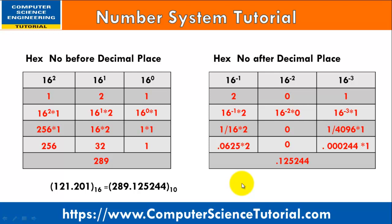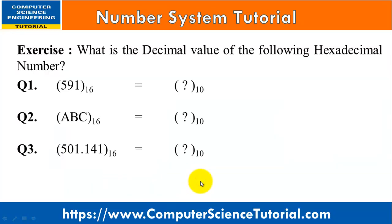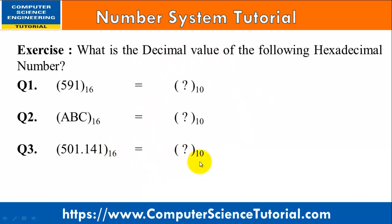Friends, the conversion process is very simple. First convert the hexadecimal digits before the decimal point, then convert the digits after the decimal point, and write both results together. Here is an exercise for you: calculate the decimal value of the following hexadecimal numbers — 591 base 16, ABC base 16, and 501.141 base 16. Solve these questions and write your answers in the comment section.